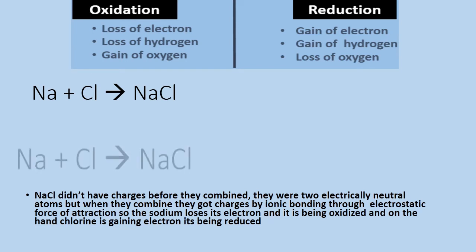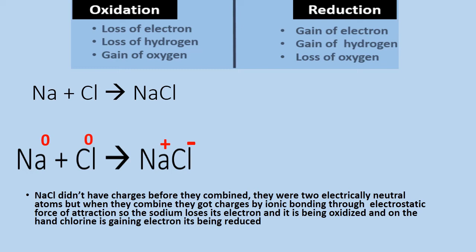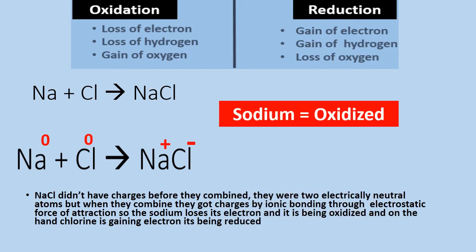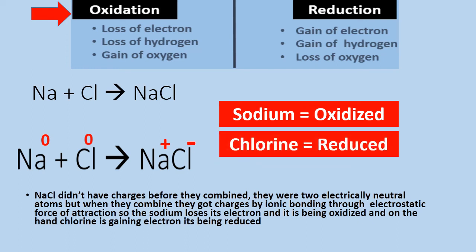Now let's look at a reaction example — sodium chloride (NaCl). In this reaction, the oxidation state of sodium is zero and chlorine is also zero. An ionic bond is created as sodium loses electrons — so sodium is oxidized — while chlorine gains a negative charge.